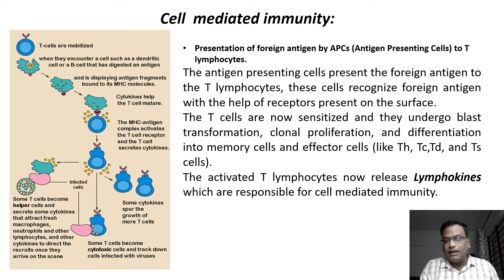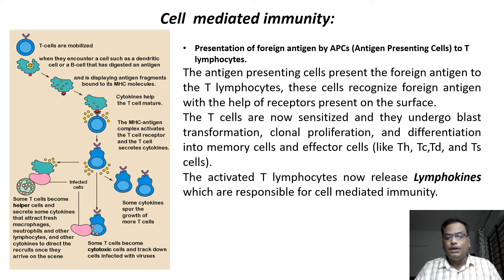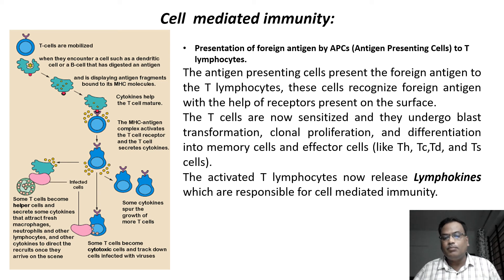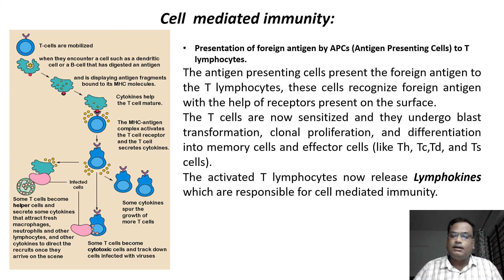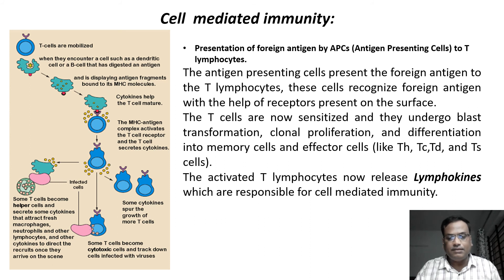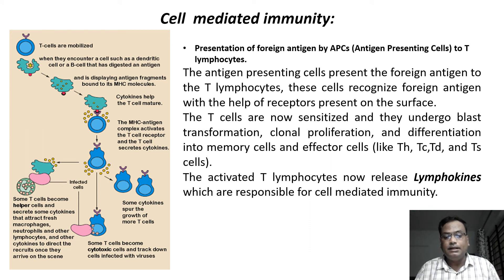Once the T cell gets sensitized by receiving the antigen, it multiplies in large numbers. These sensitized T cells differentiate — one line becomes memory cells to remember the pathogen for future infections, and other cells like TH, TC, TD, and TS are directly involved in destroying pathogens. The activated T lymphocytes release lymphokines, which are responsible for cell mediated immunity. This is the key difference: plasma cells secrete antibodies in humoral immunity, while T lymphocytes release lymphokines in cell mediated immunity.